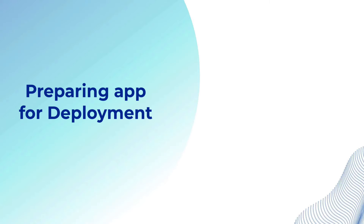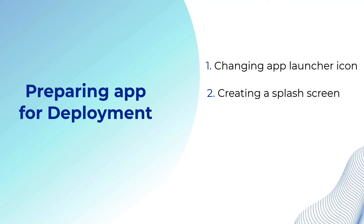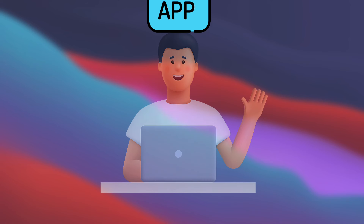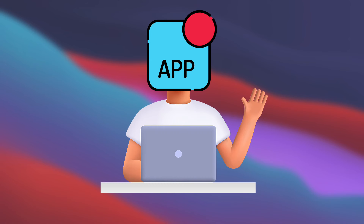We will start by preparing our app for deployment. This step includes multiple sub-steps like changing the app launcher icon, creating a splash screen, changing the app name for iOS, and optimizing the size of our app. The app icon is the face of our app — it is the first thing users see, so it is important to make a good impression.